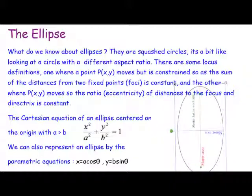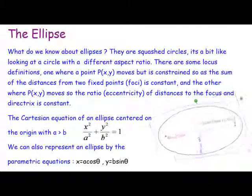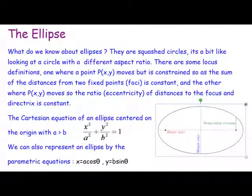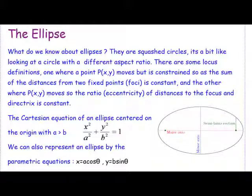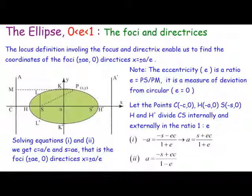Depending on whether a is bigger than b or b is bigger than a, we get a different shape on our ellipse. Normally we have a bigger than b, and the ellipse looks like a football. The eccentricity of an ellipse is always between zero and one.